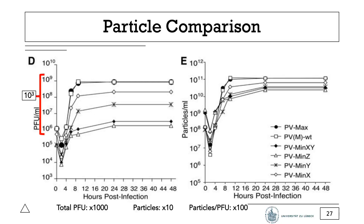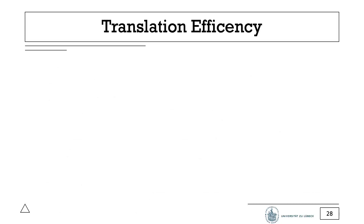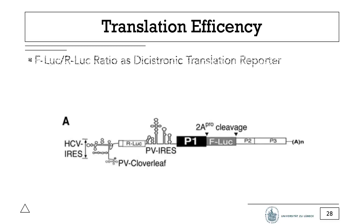In effect, the wild type required about 137 particles to form a plaque, while the strongly attenuated constructs required about 13,500. The attenuation can be mostly attributed to a reduced specific infectivity. They also compared the heat stability of the different variants as a measure of defects in the capsids, and found no differences.